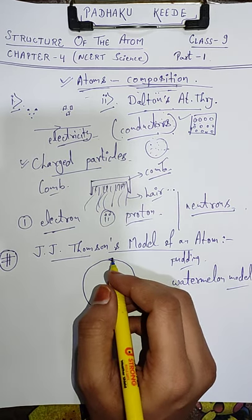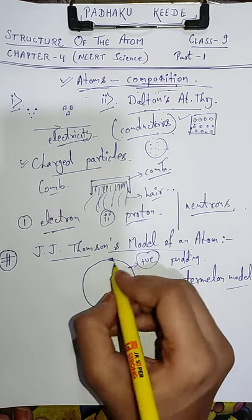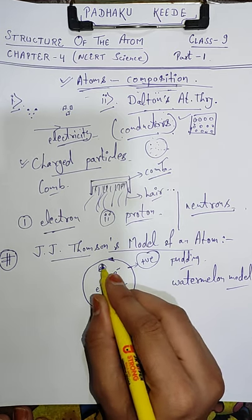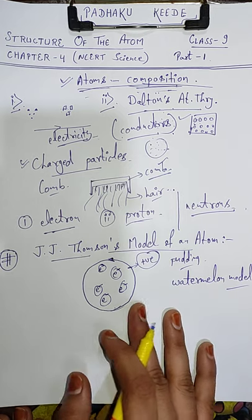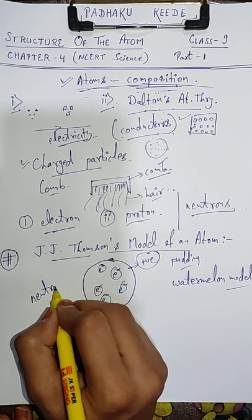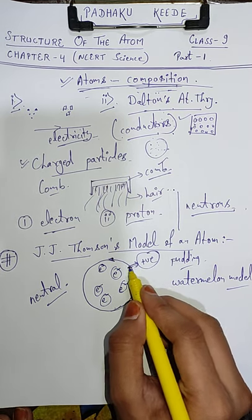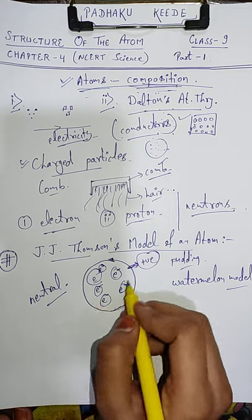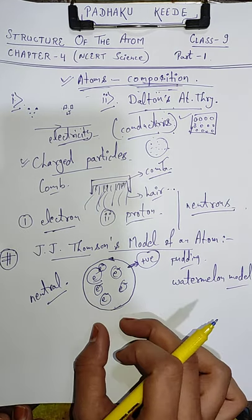J.J. Thomson ne bataya ki jo red wala part hai watermelon ka, woh positively charged hai. Aur uske andar electrons hain jo randomly embedded hain — just like watermelon ke andar seeds randomly embedded hote hain. To iske andar electrons randomly embedded hain. Aur isi tariqe se overall jo charge hoga pure atom ke upar, woh neutral hoga. Kyunki yahan pe jo positive red portion hai, woh jitna positive charge generate karta hai, utna hi neutral kar diya jata hai in electrons ke dwara, jo randomly distributed hain. So overall charge on an atom is neutral.